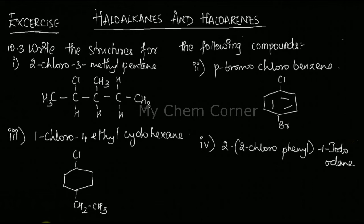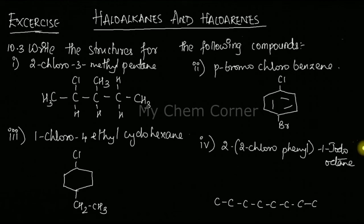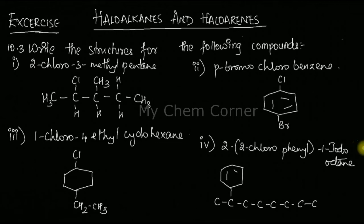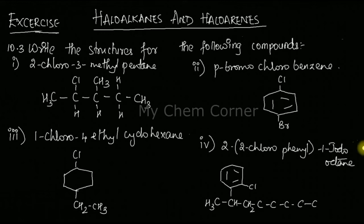The fourth compound is 2-(2-chlorophenyl)octane. The parent hydrocarbon is octane, so let's draw eight carbons. At position number two I'm going to have a phenyl ring as the branching group. Of that phenyl ring, position number two is going to have a chloro substituent. So the Cl is at position two of the phenyl ring attached at position two of the octane chain.